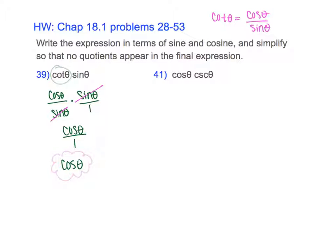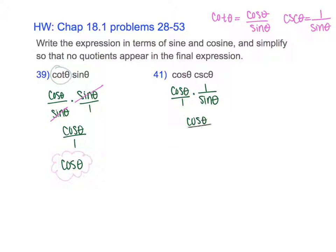Let's try another one. We're trying to change the expression so it only has sine or cosine and no fractions. Cosine I can't change, but cosecant is basically 1 over sine using the identities. So you have cosine, and you replace cosecant as 1 over sine. Putting cosine over 1 and multiplying straight across gives cosine on top and sine in the bottom. Cosine over sine is basically cotangent, so you can write it as cotangent.